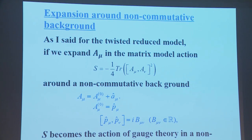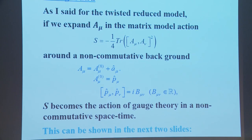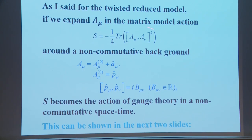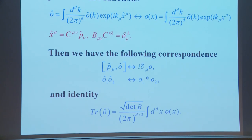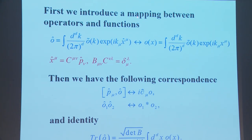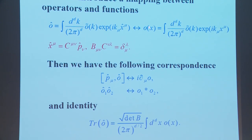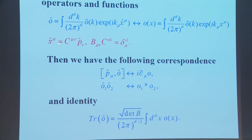We can also try to prove the large-N reduction from expansion around the non-commutative background. As I said for the twisted reduced model, if we expand A_μ in the matrix model action around the non-commutative background, S becomes the action of gauge theory in a non-commutative space. The proof involves introducing a mapping between operators and functions: we write a function O(x) in Fourier transform and replace x_μ with operator x̂_μ, where x_μ is a linear combination of P_μ. This is essentially a Weyl ordering.